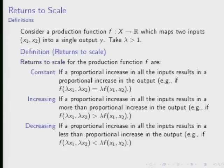Let me define returns to scale. Consider a production function f mapping inputs x1 and x2 into a single real output, and a scale factor lambda greater than one. If we increase all inputs by lambda and get out exactly lambda times the production — say doubling inputs yields exactly double output — that's constant returns to scale. If doubling inputs yields more than double output, that's increasing returns to scale. If doubling inputs yields less than double output, that's decreasing returns to scale.